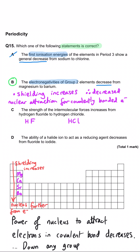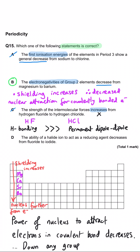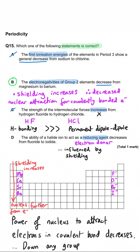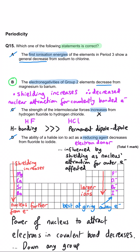Checking why C is wrong: the strength of intermolecular forces increases from hydrogen fluoride to hydrogen chloride — definitely not, because hydrogen fluoride has hydrogen bonding which is much stronger than the permanent dipole-dipole forces in hydrogen chloride. And D: the ability of the halide ion to act as a reducing agent decreases from fluoride to iodide — this is wrong because larger ions hold their outer electrons less tightly, so iodide, being much bigger than fluoride, lets electrons go more easily and is therefore a better reducing agent. So D is also incorrect.